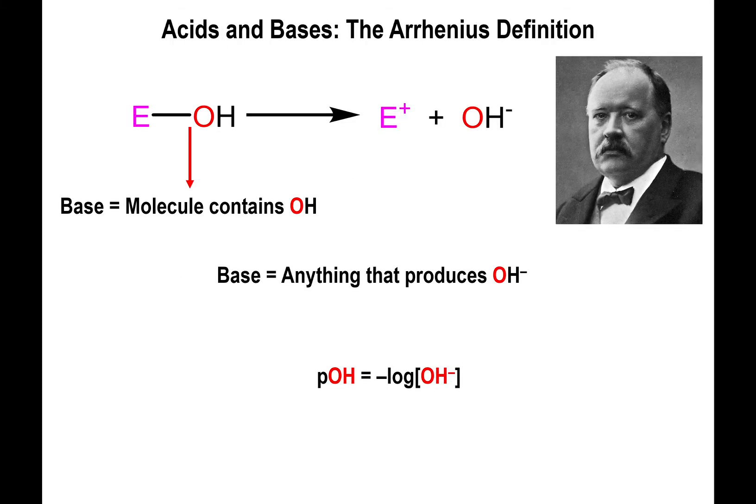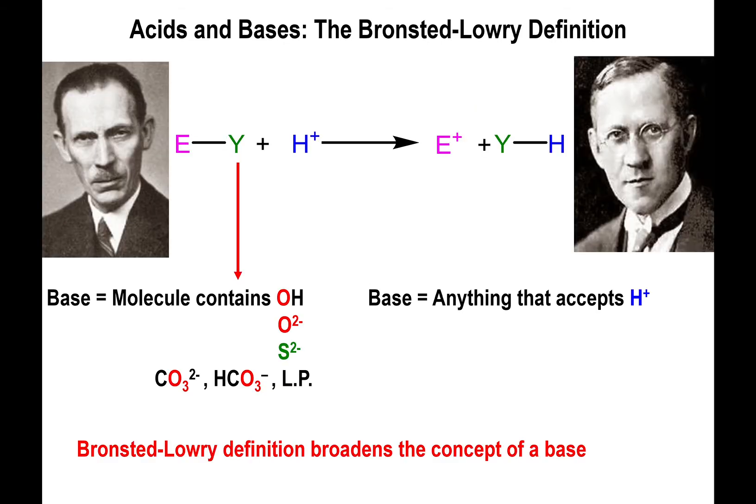We already talked about the Arrhenius definition of acids and bases — from the point of view of Arrhenius, if you have an H, you're an acid; if you have an OH, you're a base. And then you have the Brønsted-Lowry definition, which tells you that if you donate an H⁺, you're an acid; if you accept an H⁺, you're a base.